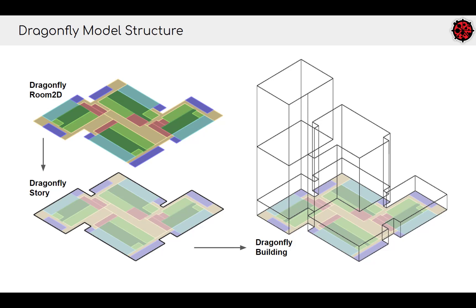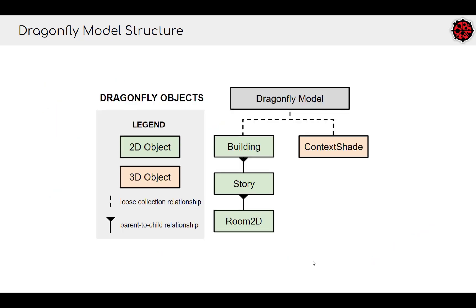Dragonfly is fundamentally an abstracted way of representing building geometry — much more abstract than Honeybee, which represents geometry as a detailed 3D model. Every Dragonfly model has building geometry represented as a series of extruded 2D floor plates. These models are built with a hierarchy of individual room 2Ds that can be joined together into a story object, and those story objects come together to create a Dragonfly building representation.